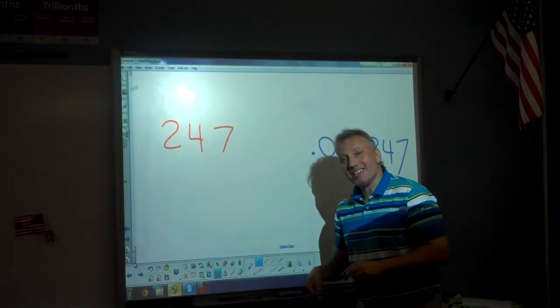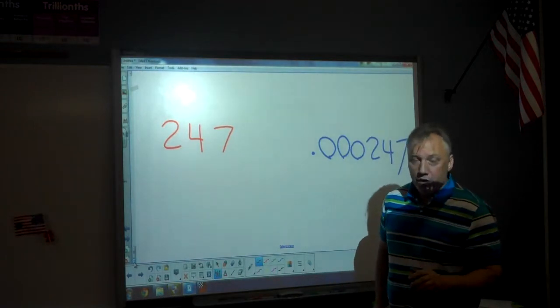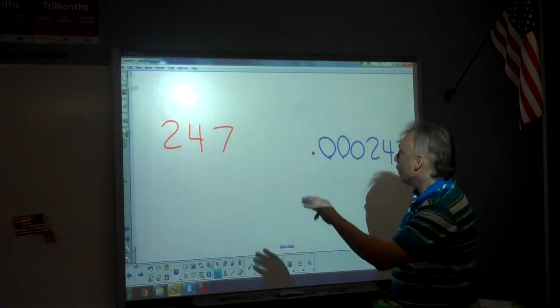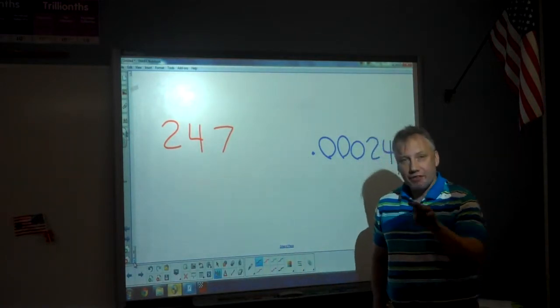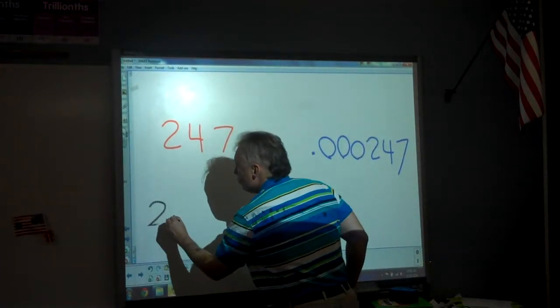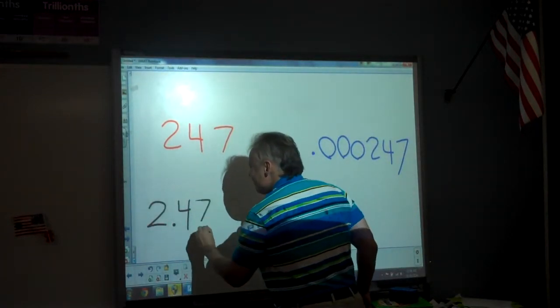The thing to remember is that in scientific notation, there's always going to be just one number in front of the point. So if you have 247 as the non-zero digits, you would write it as 2.47.